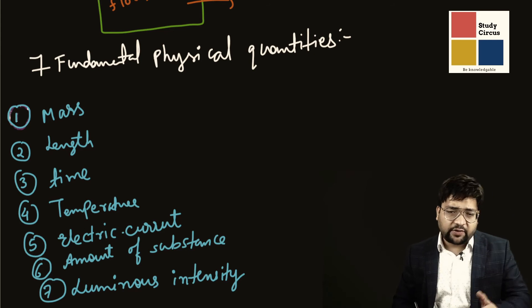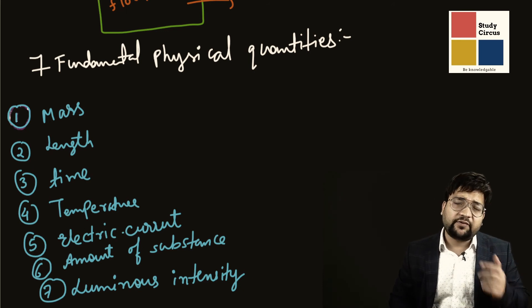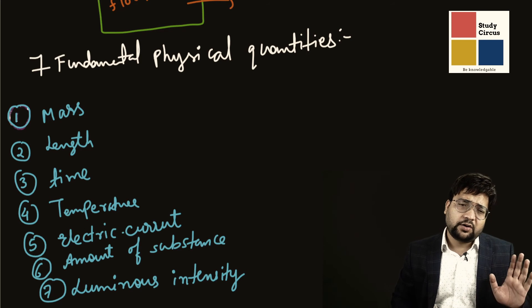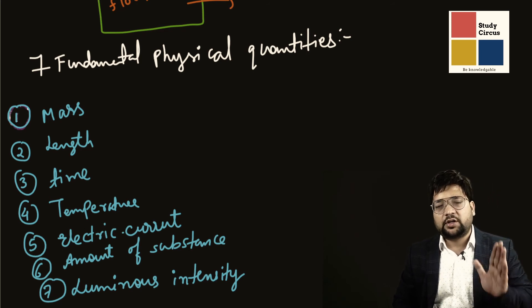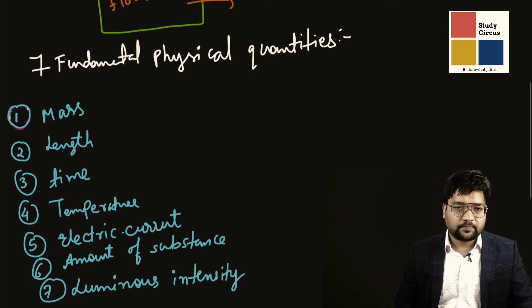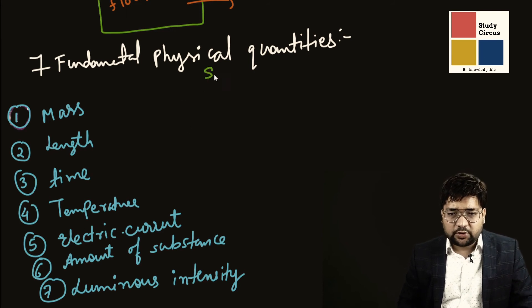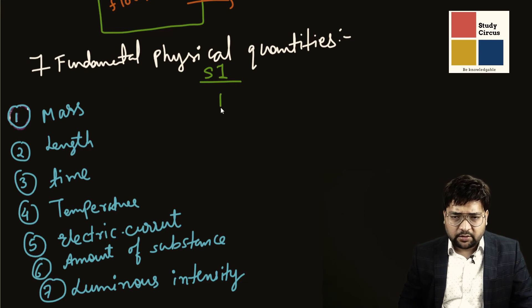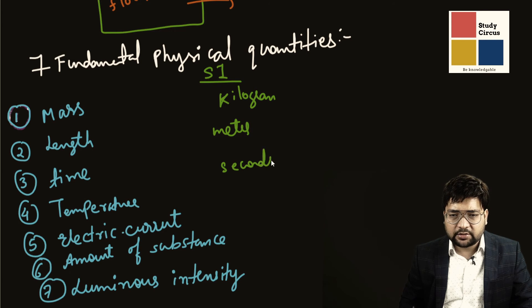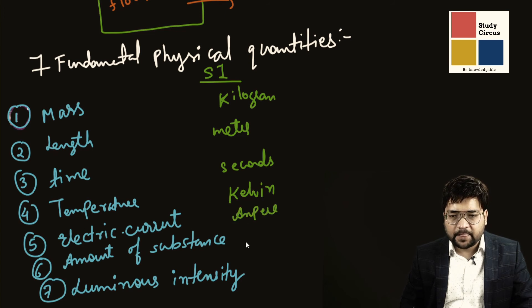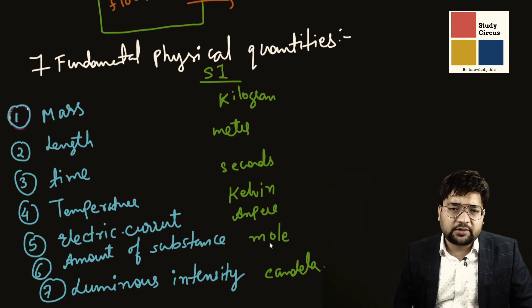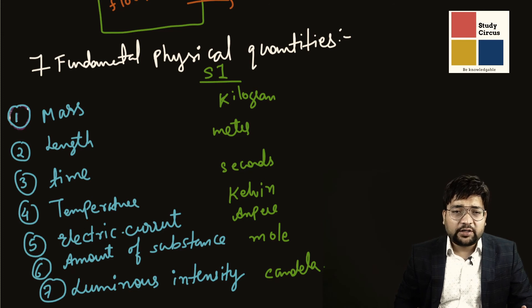These are the seven fundamental ingredients in the kitchen of physics, and every physical quantity — force, momentum, acceleration, displacement — can be explained using some or other combination of these seven. Now the SI units: mass is kilogram (kg), length is meter, time is seconds, temperature is kelvin, electric current is ampere, amount of substance is mole, and luminous intensity is candela. These are the SI units of the seven fundamental physical quantities.